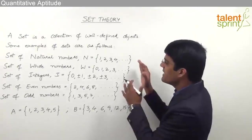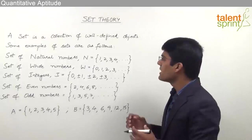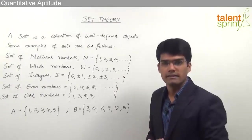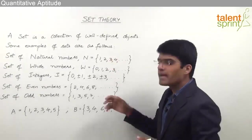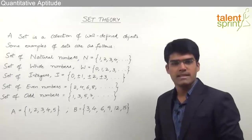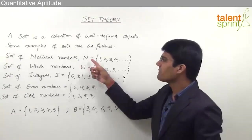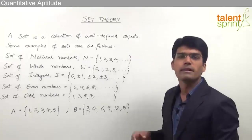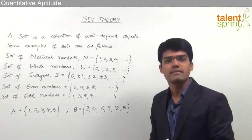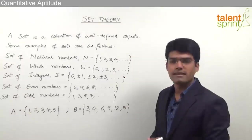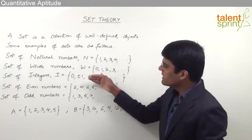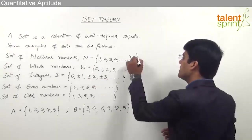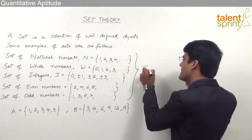In the first five examples, the number of elements in each of the sets is infinite, and hence these are called infinite sets. For example, the set of natural numbers — 1, 2, 3, 4 up to infinity — has infinite elements and hence is called an infinite set. Likewise, in all the remaining cases we have infinite elements, and hence all these are referred to as infinite sets.